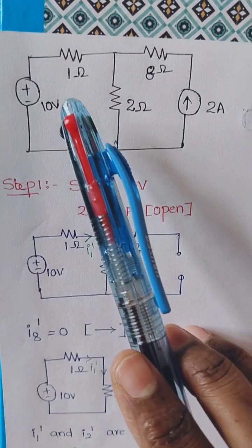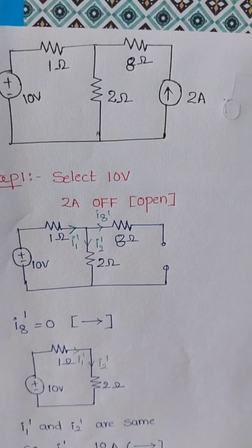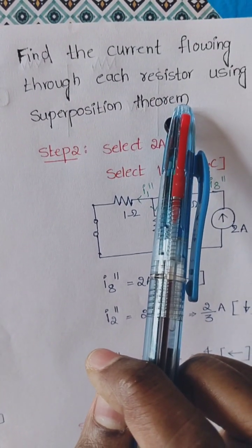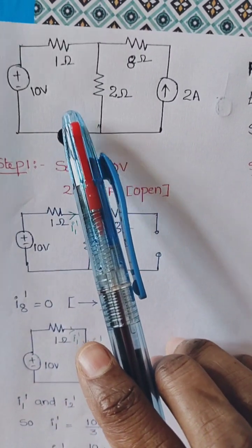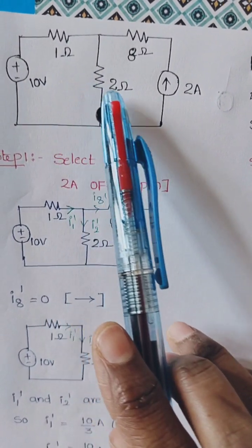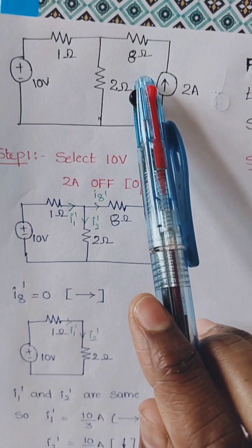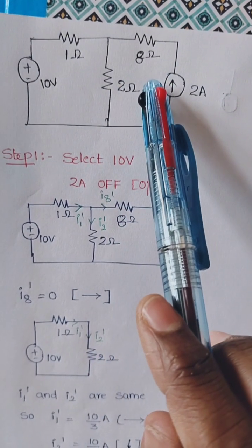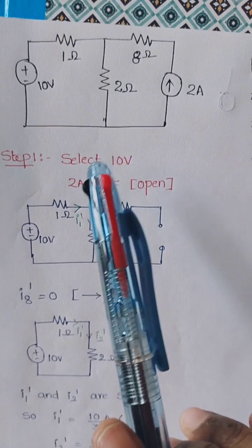Today our problem is to find the current flowing through each resistor using the superposition theorem — specifically through the 1 ohm, 2 ohm, and 8 ohm resistors. In order to find the current through each resistor using superposition theorem, we follow these steps.